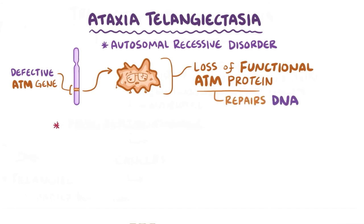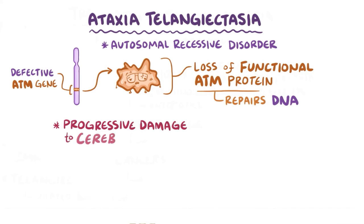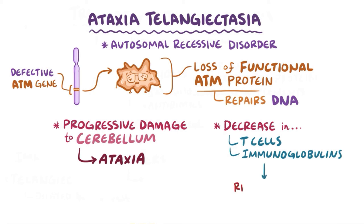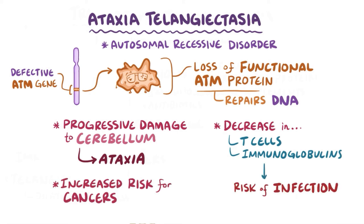As a result, patients experience progressive damage to cells across the body, especially those in the cerebellum, which causes ataxia. Ataxia telangiectasia can also cause a decrease in T cells and decreased immunoglobulin levels, causing a weakened immune response as well as an increased risk of developing cancers.